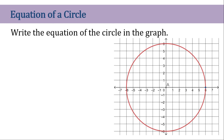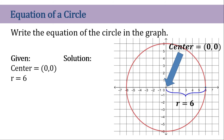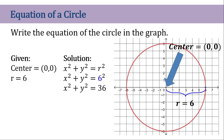Let's try another one. We are given a graph and we need to find the center and the radius. All we need to do is identify them from the graph. The center is at (0, 0) and the radius is 6 units. That's all we need, and then we write the equation of the circle.